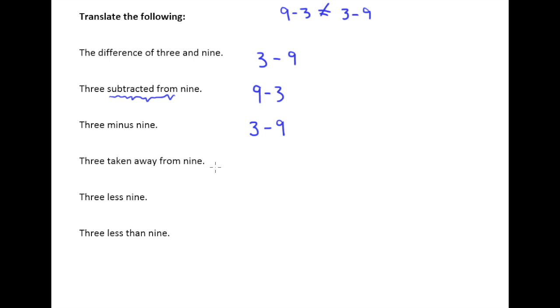"3 taken away from 9" - again, if you are going to take away from 9, the 9 already needs to be there. So this is another one we have to flip-flop the order that the numbers are given in the sentence.